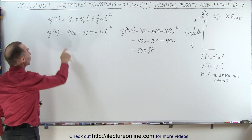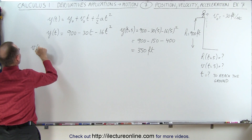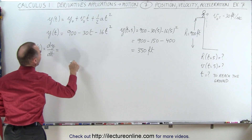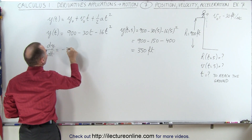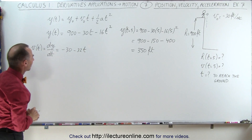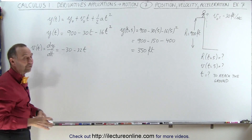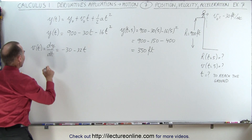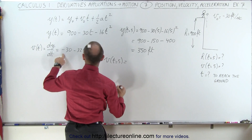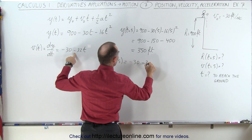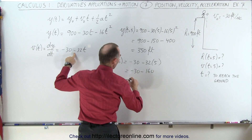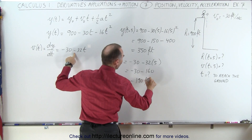To find the velocity we need to take the derivative of this function. The velocity as a function of time equals the derivative of position with respect to time, which gives minus 30 minus 32t. Evaluating at t equals 5 seconds: velocity equals minus 30 minus 32 times 5, which is minus 30 minus 160, giving minus 190 feet per second.